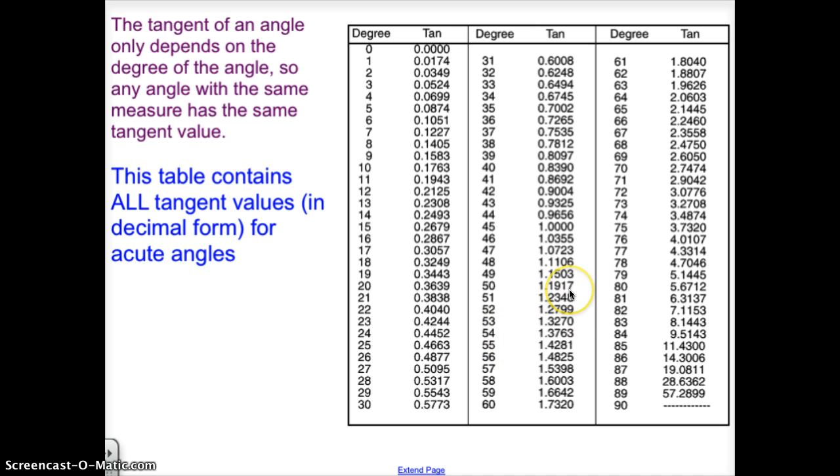This table just has the decimals for tangent. So if we were to take the decimal value for any one of the adjacent and opposite sides when they are divided, you'll look and find the closest one that you have in each one of these columns.